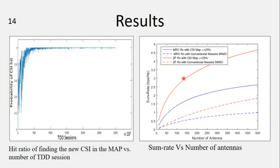At the right, we are comparing the sum rate versus the number of antennas of conventional massive MIMO and the CSI map we proposed. We used to compare these results MRC receiver, which is the maximum ratio combination receiver, and the zero-forcing receiver. In both results, in maximal ratio and in zero-forcing receiver, the CSI map results overcome the conventional massive MIMO, especially with the zero-forcing receiver.